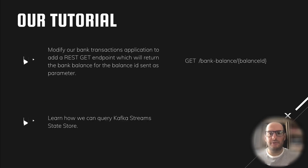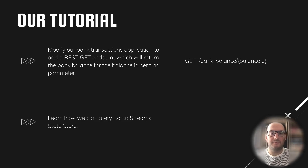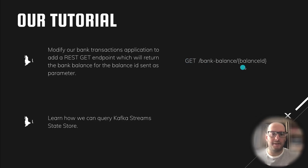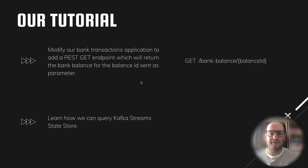For our tutorial, we're going to modify our existing bank transaction application and add a REST GET endpoint to return the bank balance for a given ID. The endpoint will look like this: GET bank balance with the bank balance ID as a path parameter. We are going to learn how we can query the Kafka Streams state store and return it in a REST call.